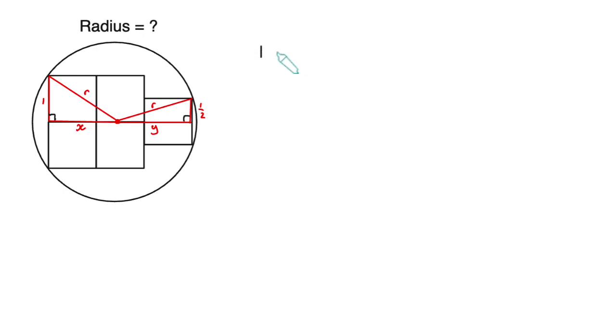By Pythagoras theorem on the first triangle we have 1 squared plus x squared equals r squared, and by Pythagoras theorem on the second triangle we have r squared equals one half squared plus y squared. So we can eliminate the r squared and just say that 1 plus x squared equals one half squared plus y squared.